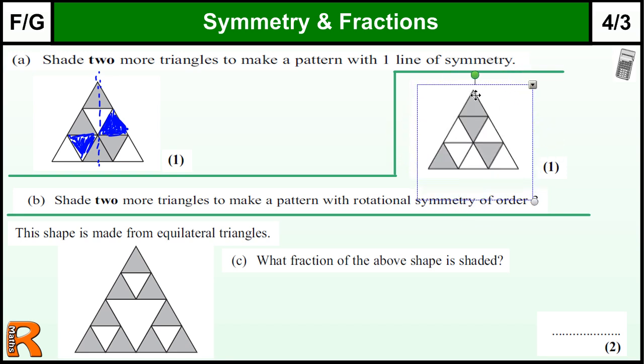So what we need to do is color in this one here and that one there, so those three will spin onto each other and these outer three will spin onto each other. That gives us rotational symmetry order three.